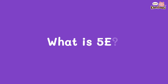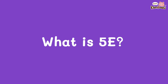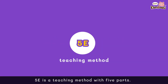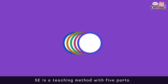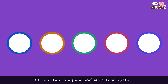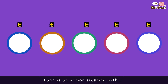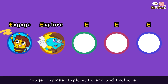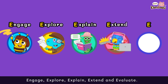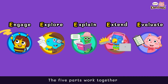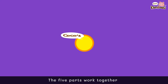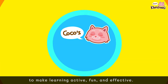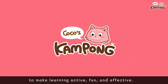What is 5E? 5E is a teaching method with five parts. Each is an action starting with E: Engage, Explore, Explain, Extend, and Evaluate. The five parts work together to make learning active, fun, and effective.